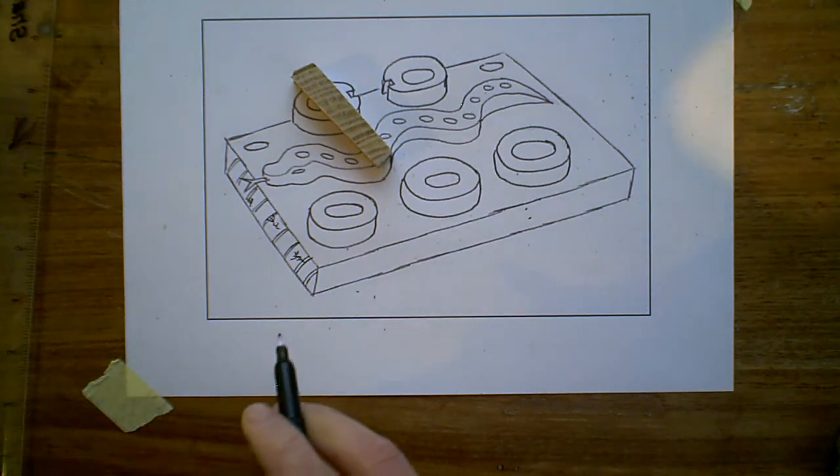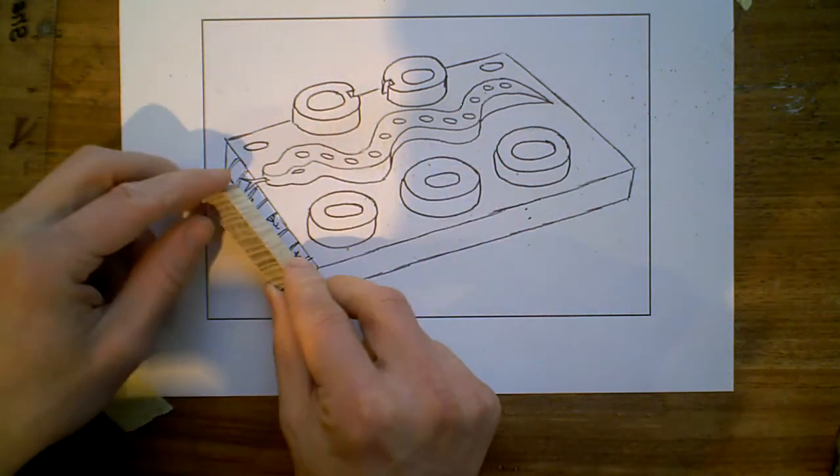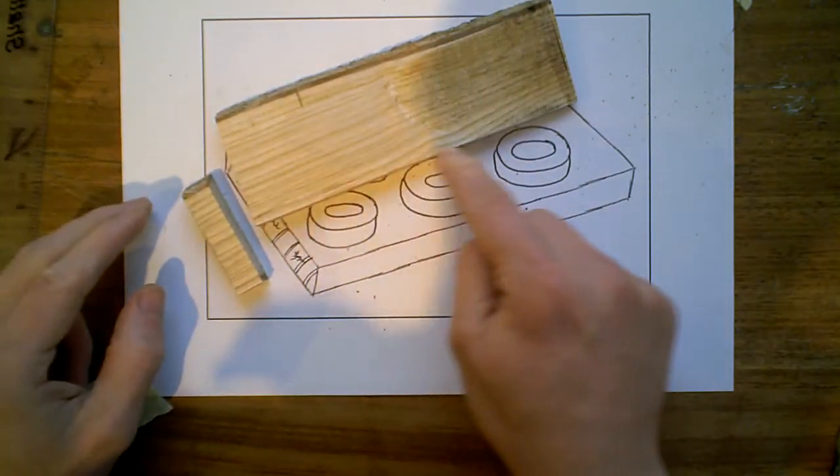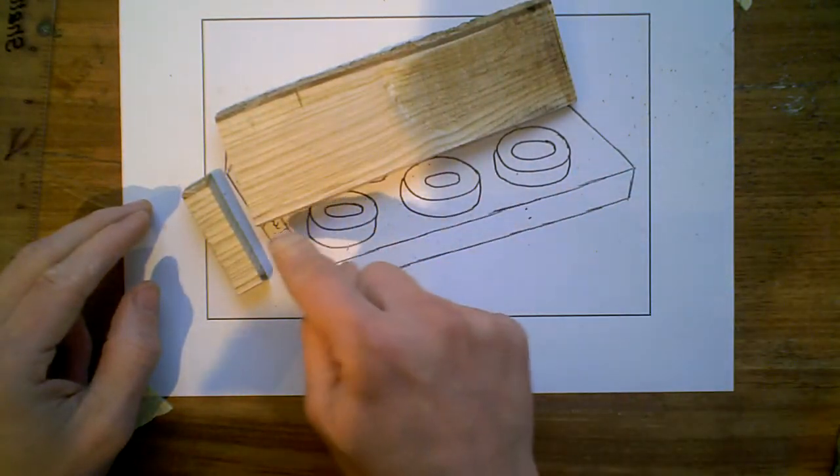So we've got the end grain on there. Now from there, so that's how it would look at the end, we notice that the streaks just carry on basically running down the material.